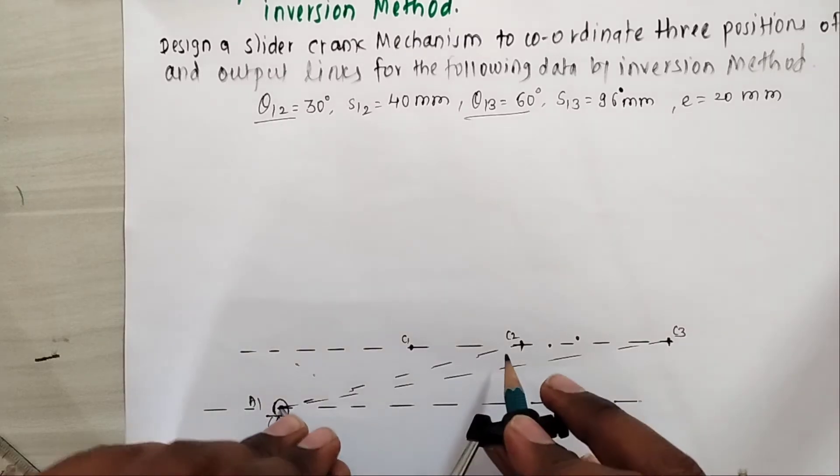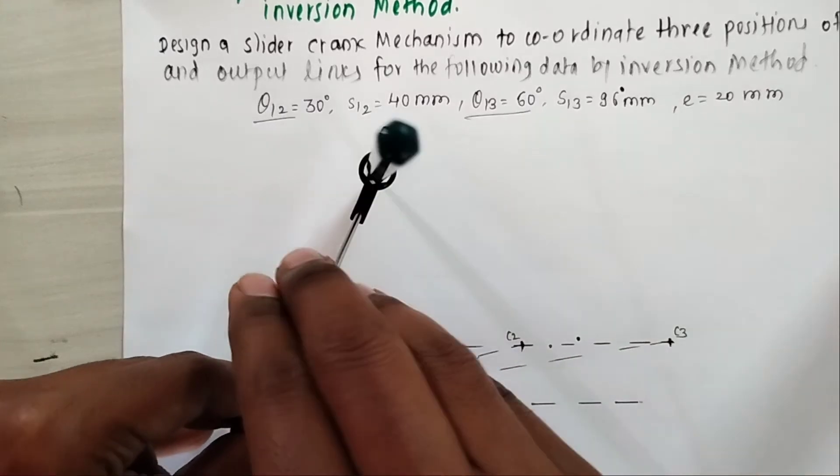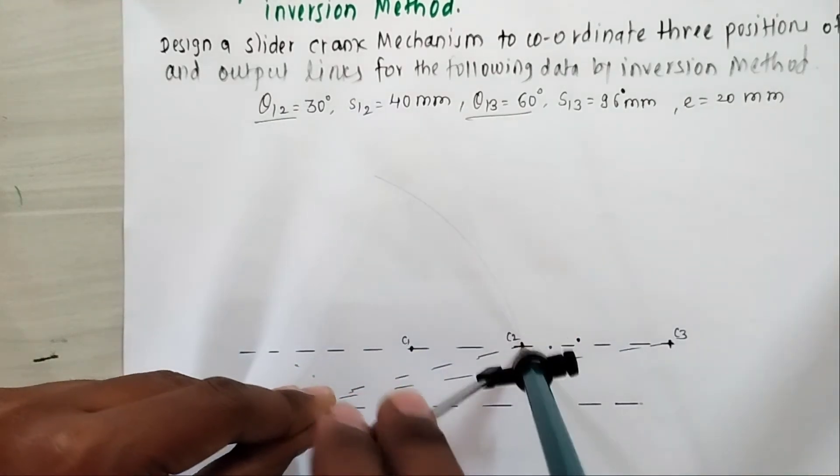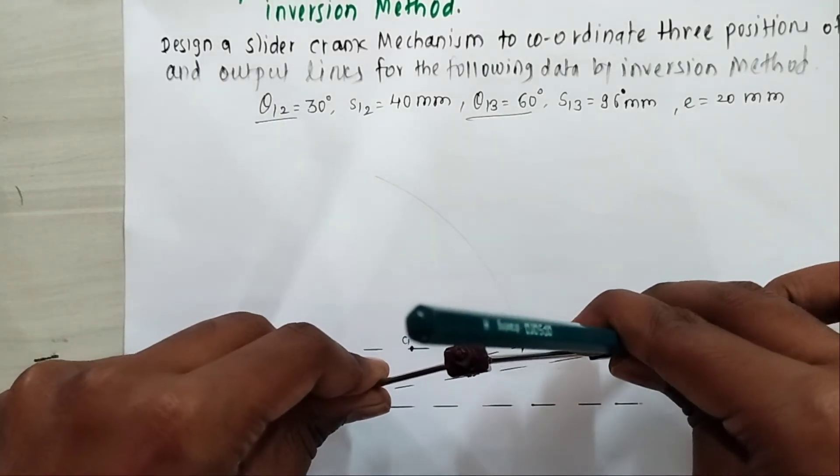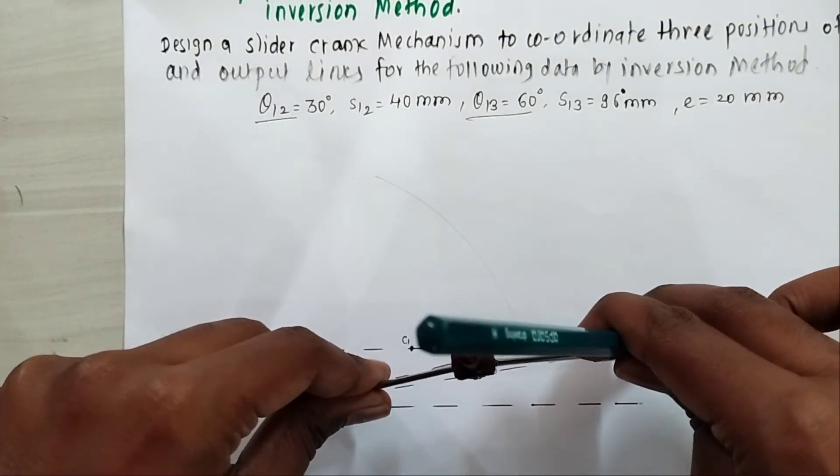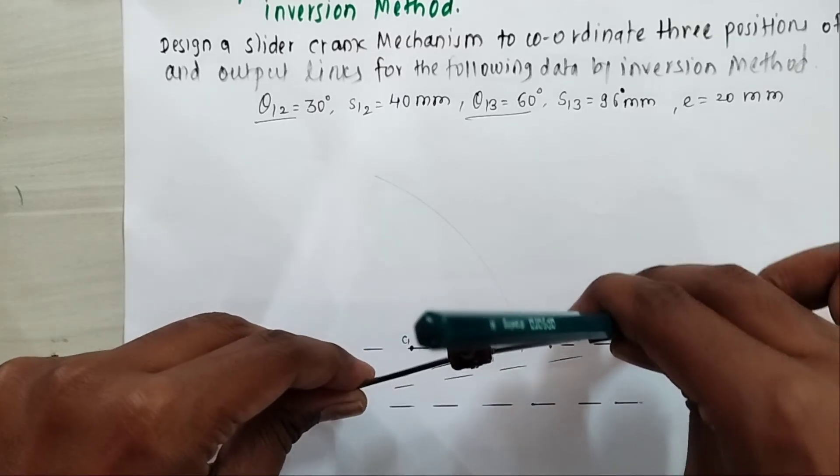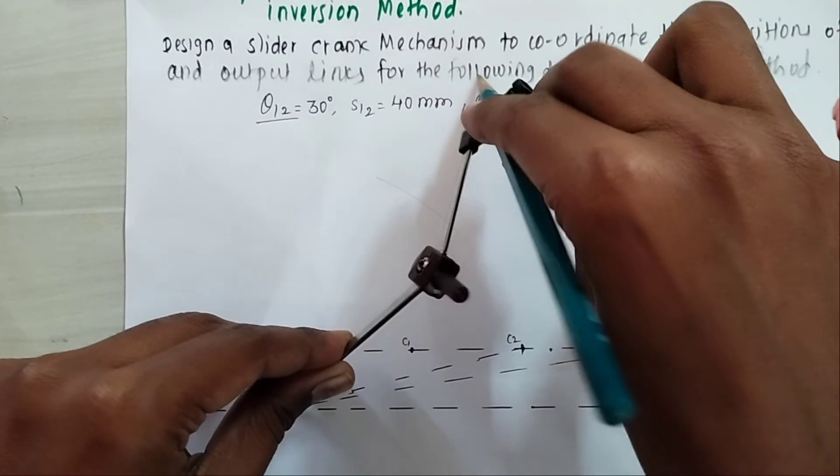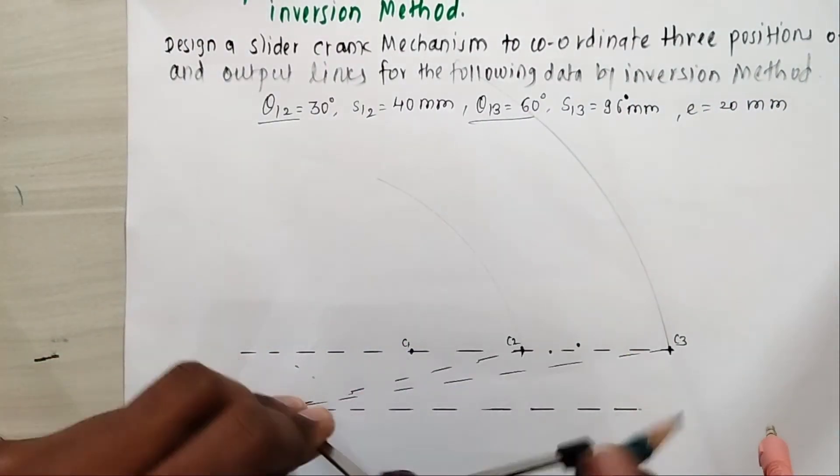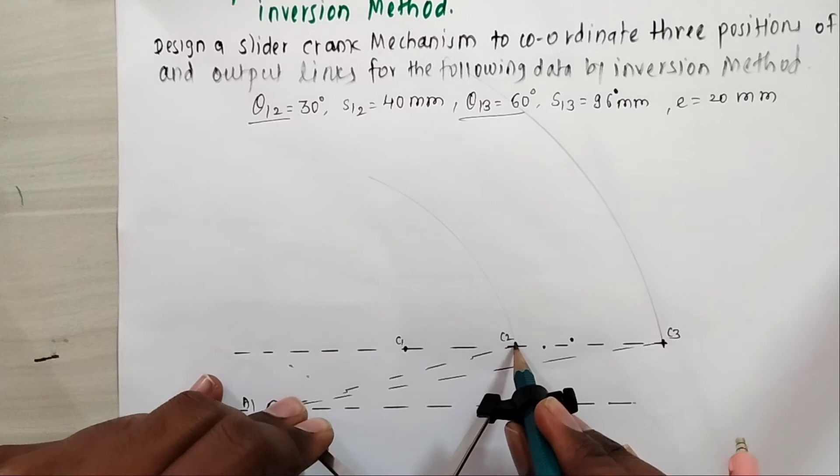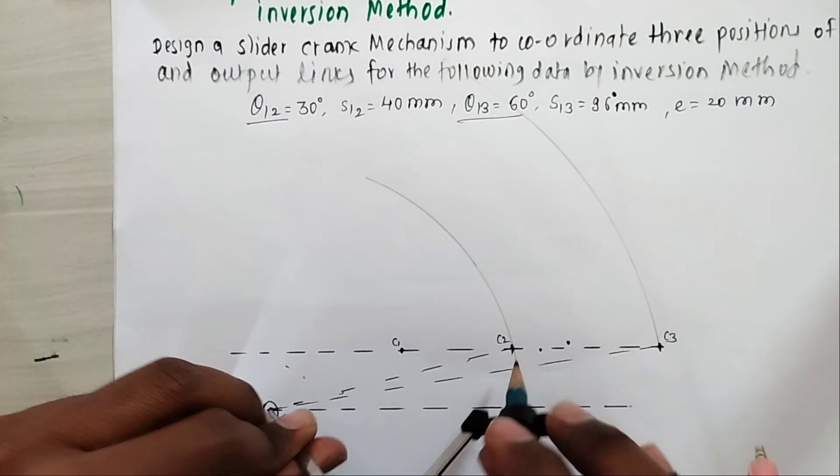With A1 as center and A1C2 as distance, cut an arc. Similarly with A1 as center and A1C3 as distance we can cut an arc. So I cut these two arcs with A1C2 and A1C3.